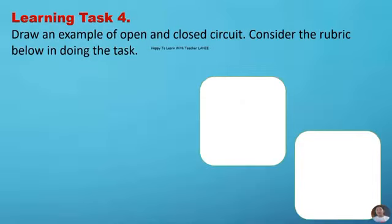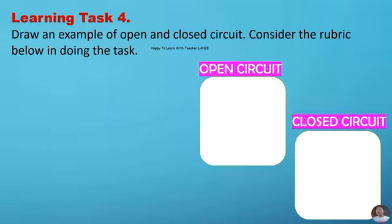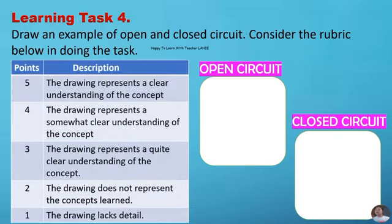Learning task number four. Draw an example of open and closed circuit. Consider the rubric below in doing the task. Five points: the drawing represents a clear understanding of the concept. Four points: the drawing represents a somewhat clear understanding of the concept. Three points: the drawing represents a quite clear understanding of the concept. Two points: the drawing does not represent the concepts learned. One point: the drawing lacks detail.